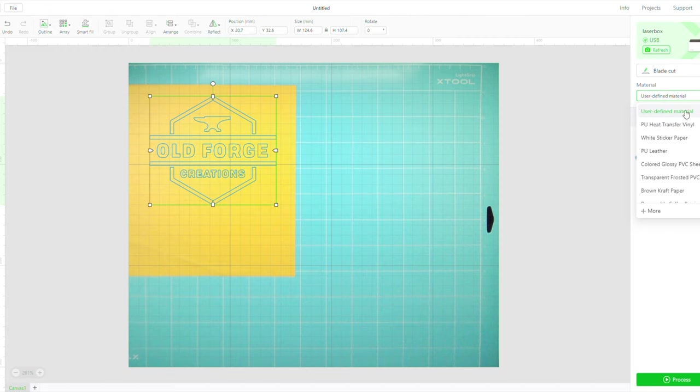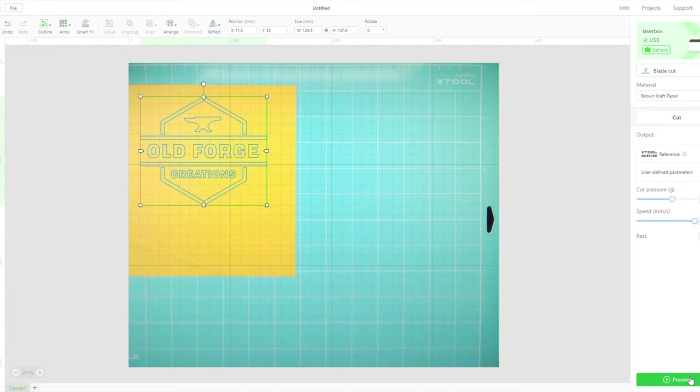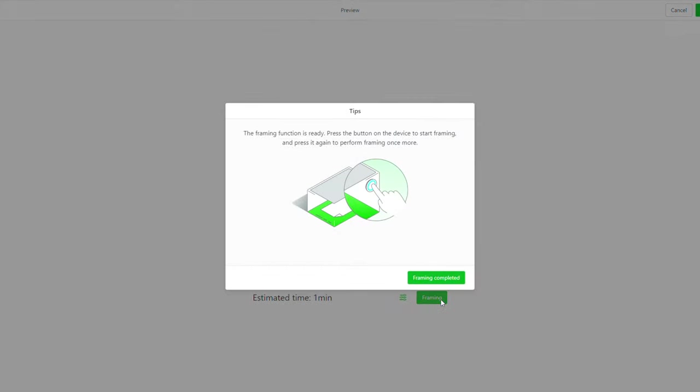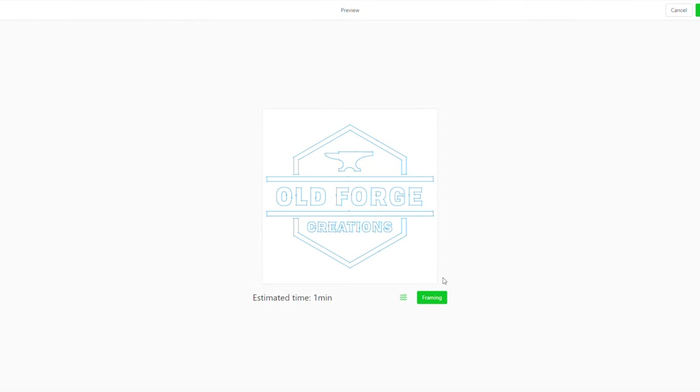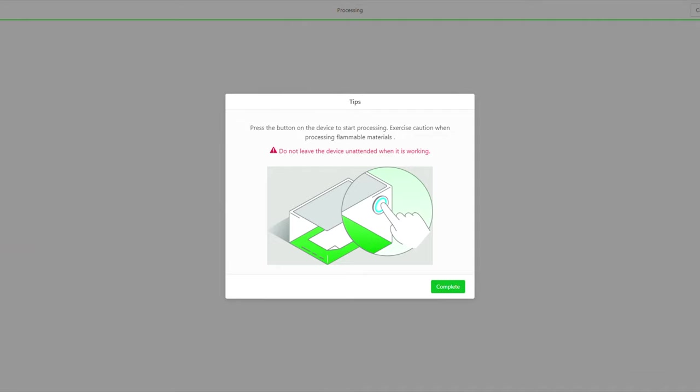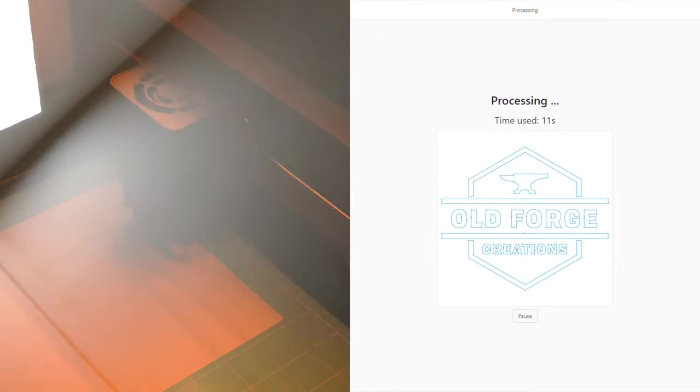It does a preview where it shows you the outline of the shape that it's going to cut before it cuts, like this, so that you can see where it's going to be and you set your framing make sure you're happy with that. If you are you just go on the software, press a button on the machine to set it off and off it goes and it will cut the shape.